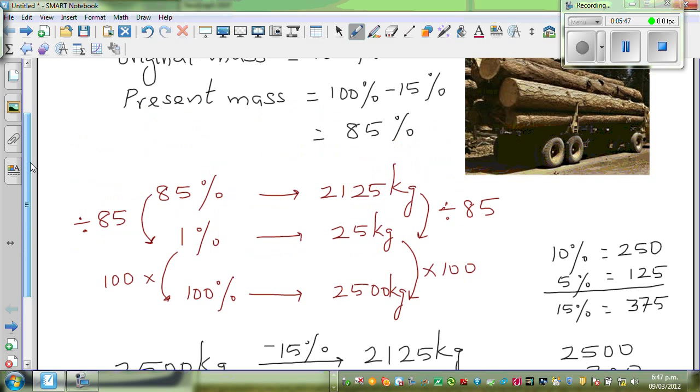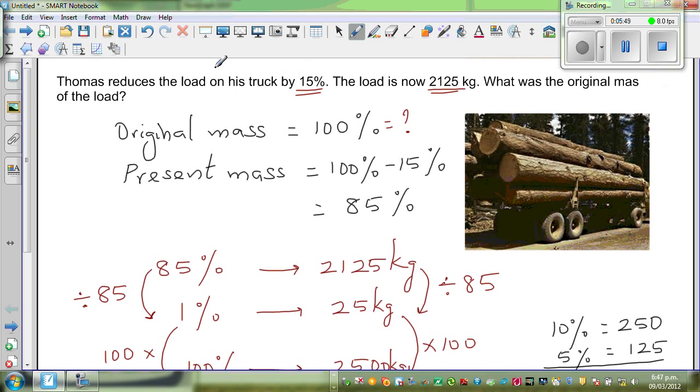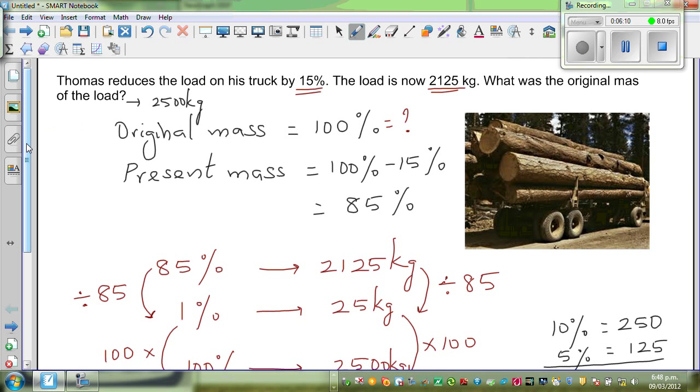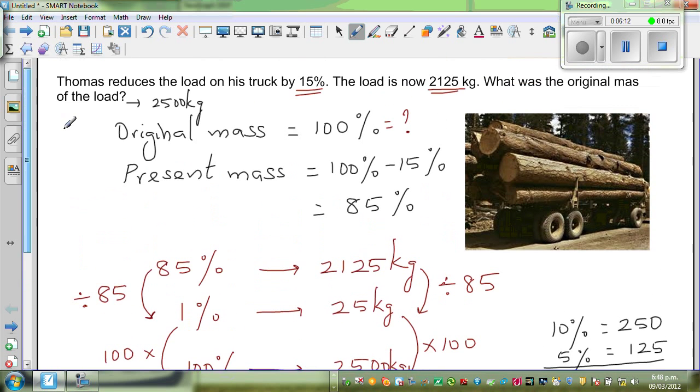So let us read the question again to confirm. So it had an original weight and it was reduced by 15%. And the present weight is 2125 kg. So the original weight is 2500 kg. So this is how you can work out the original amount using proportional thinking without getting involved in any formula.